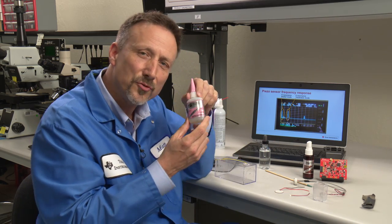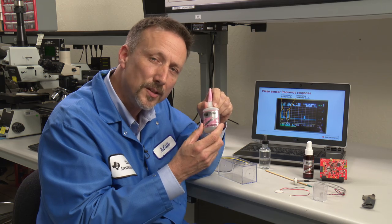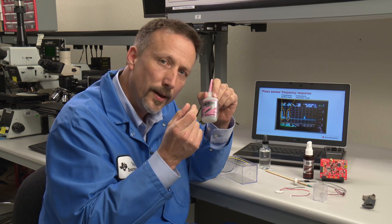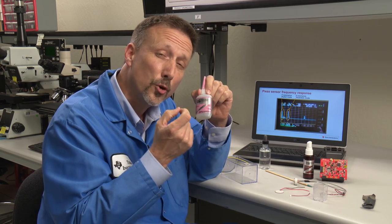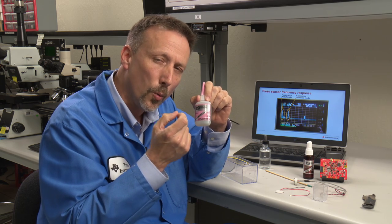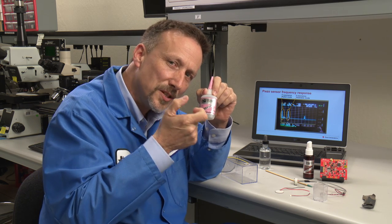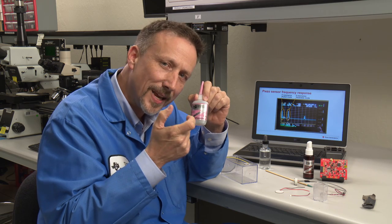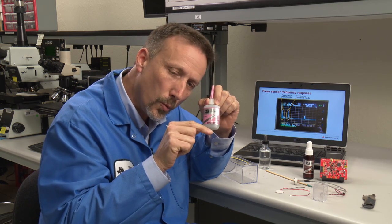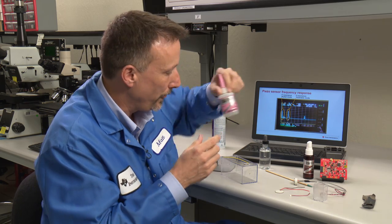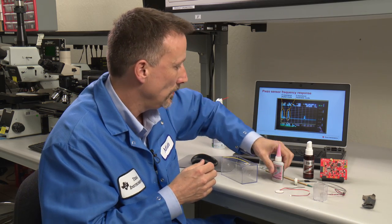The other thing that's really useful about crazy glue is it starts out as a liquid, and when it cures, it becomes a crystal. So it's the best of all worlds because it's incompressible, and all of that ultrasonic energy makes it through the glue into the wall and into your medium. Let's glue this transducer on right now.